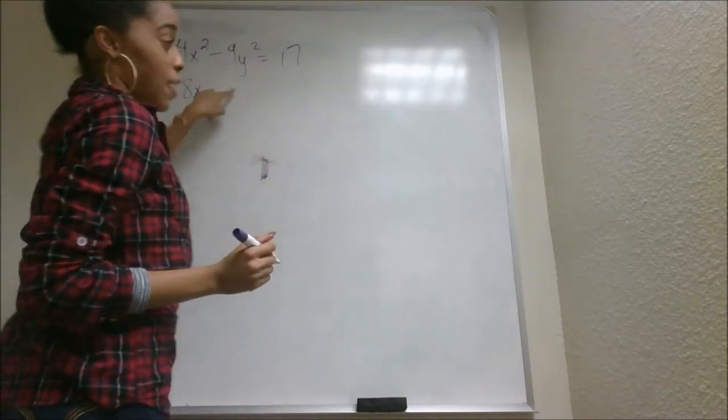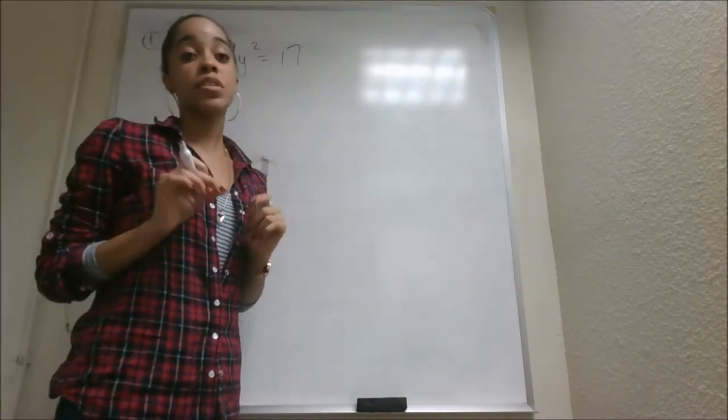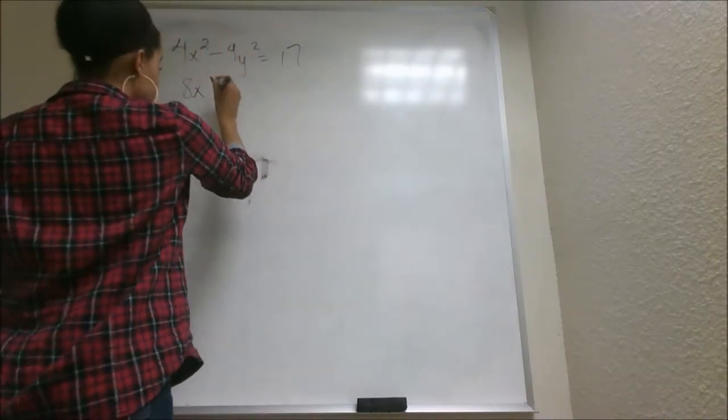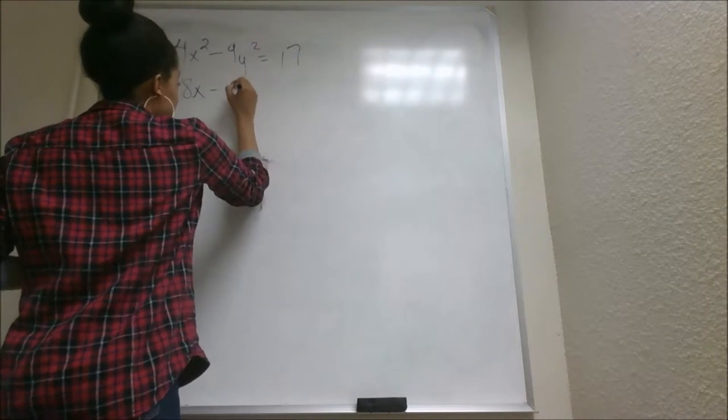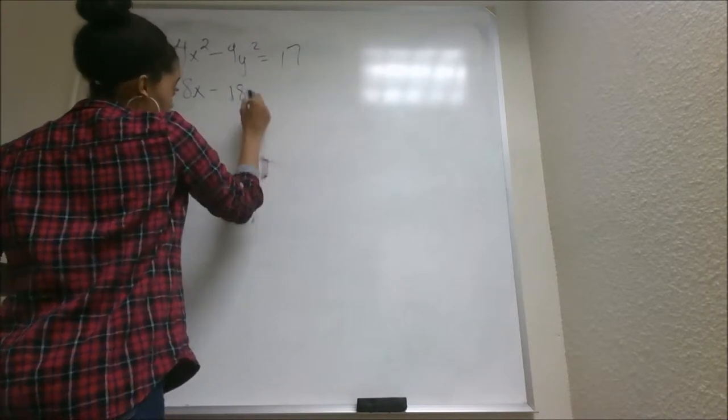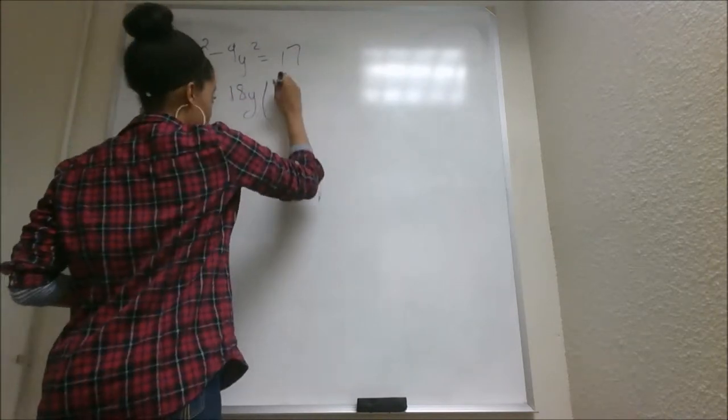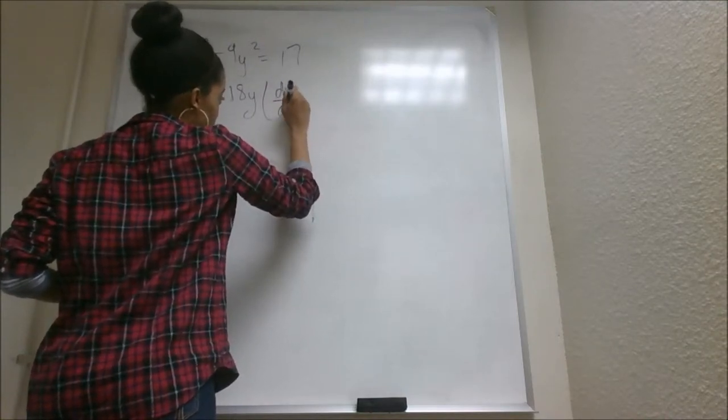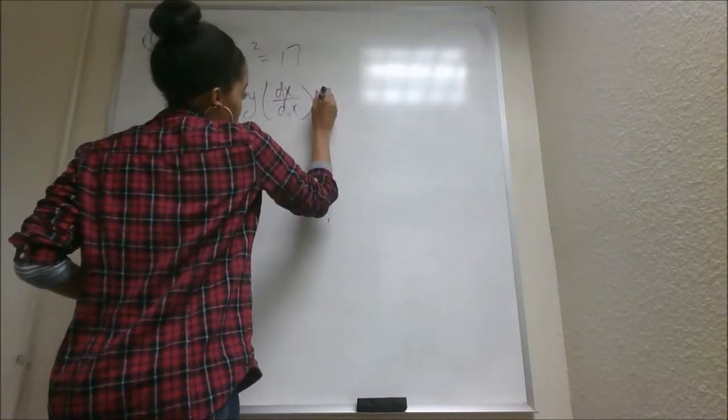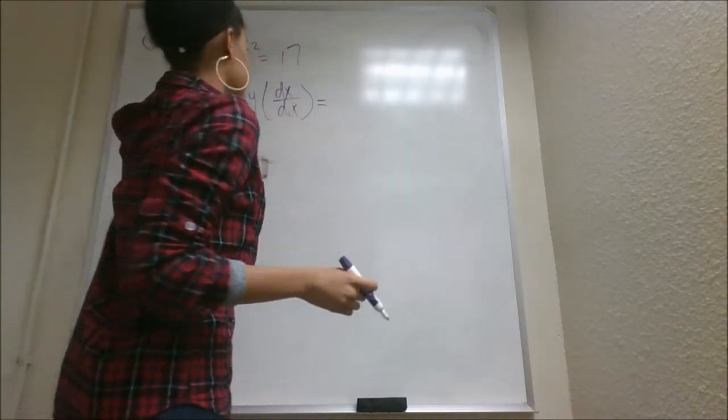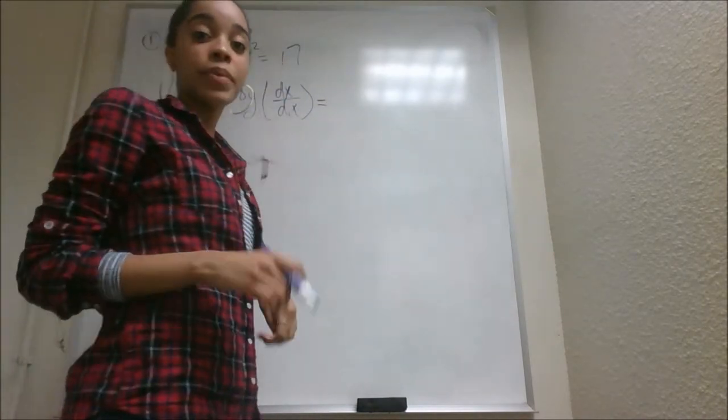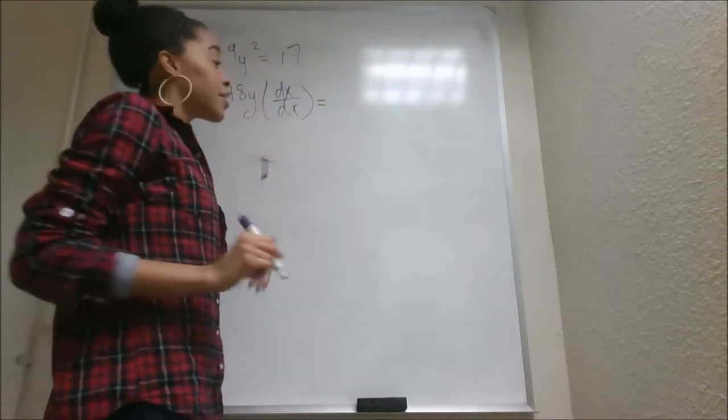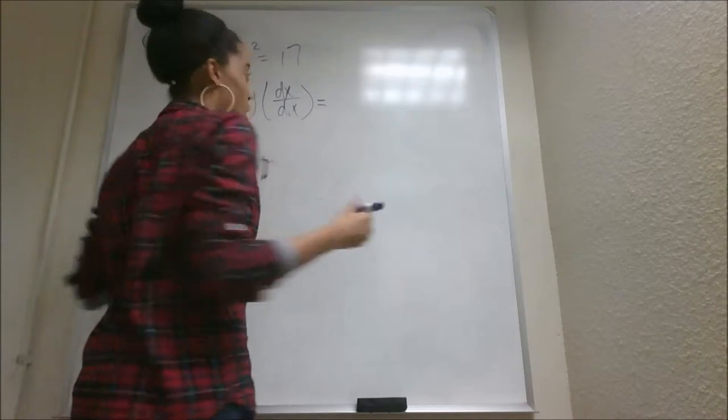Now you see that you have a y term. And remember, whenever you see a y, you have to multiply it by dy over dx. So we're going to apply the power rule to give us 18y. And then we're going to multiply it by dy over dx. You're also going to find the derivative on both sides. And you don't normally do this on explicit, but in implicit, you do find the derivative of this side as well. So we all know that the derivative of a constant is always zero.